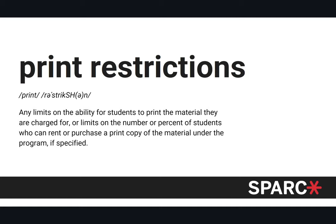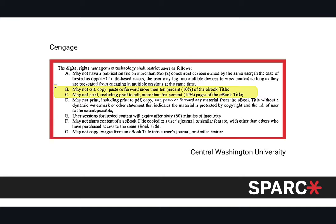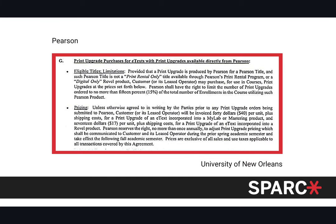Publisher contracts also include print restrictions — limits on students' ability to print the materials they're charged for. A common example is that students cannot print more than 10% of the book, or copy and paste more than 10% of the ebook. Additionally, students must pay an additional price to get a print version, plus any shipping costs.